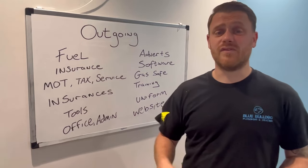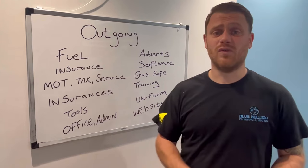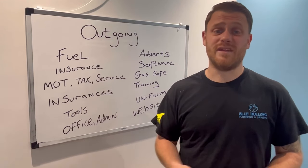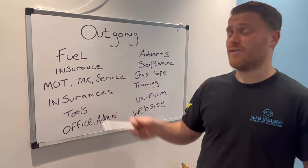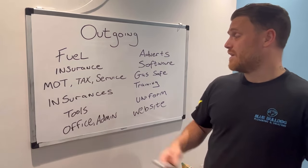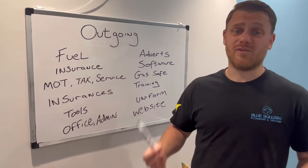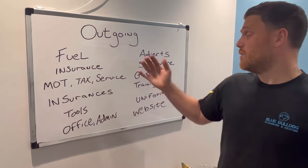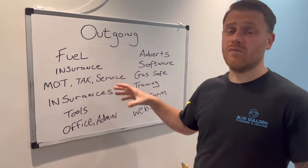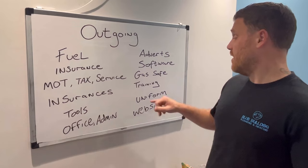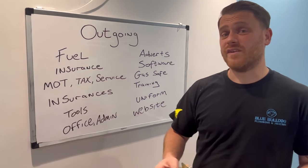Consider how much each of these things is going to cost you every month — it'll differ from person to person. If you've got a small radius you won't spend much on fuel, but if you're out in the sticks and travelling a lot, fuel could be much more. Same with insurance, tax, MOT depending on your van. Go through everything and work out your monthly spend. For yearly costs like Gas Safe, just divide by 12.